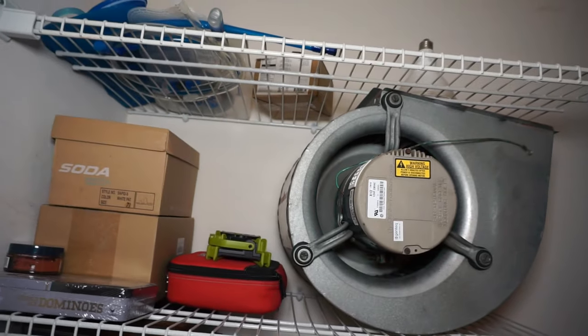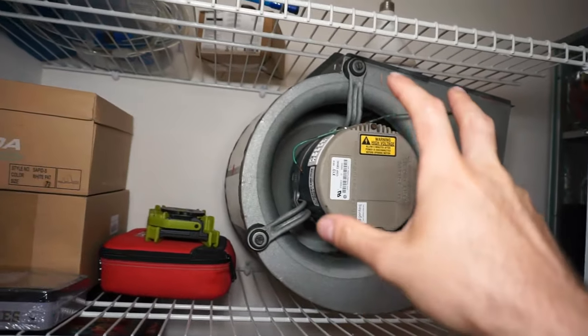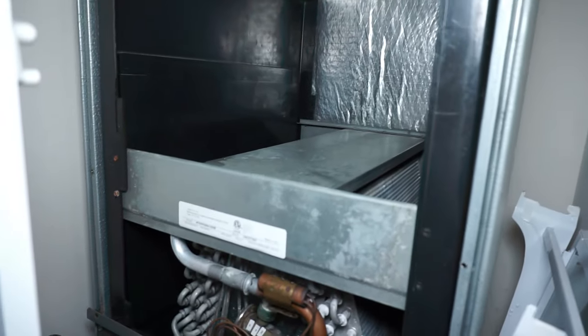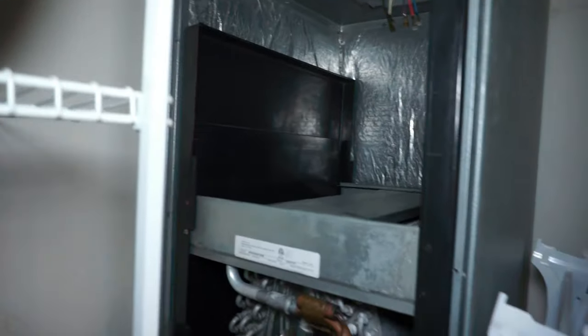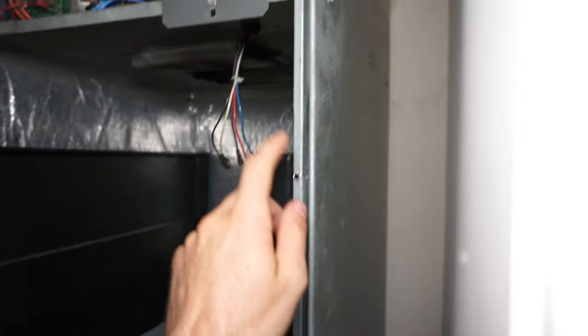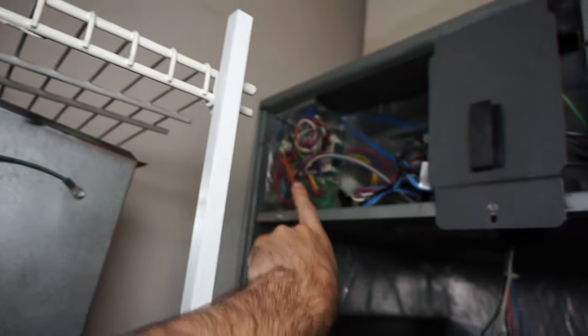So today we're going to go ahead and show you how to take this out. But before I go into that, let's just show you how I got this out of here. So on your AC handler here, there are six bolts. There's one here, here, here, and then there's three along the other edge. So that's how you take the front panel off.